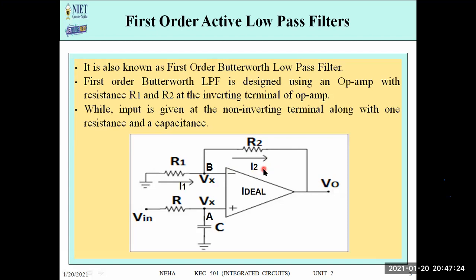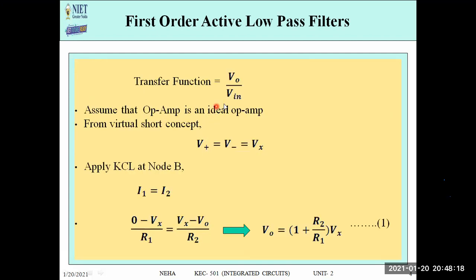Current through R1 is I1 and through R2 is I2. At the non-inverting terminal, a parallel combination of R and C is connected. Node A is at the non-inverting terminal and node B is at the inverting terminal. According to the virtual short concept, both terminals have the same potential when negative feedback is used.